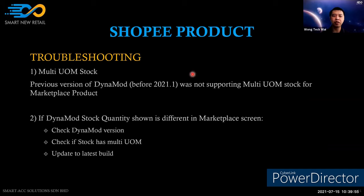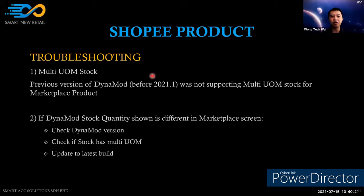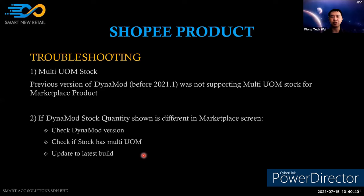The troubleshooting for the stock balance mismatch: first, check whether it is a multi-UOM stock item matched with a multi-UOM record, because in Dynamo the stock balance is stored by base UOM or converted to the respective UOM. This is why the balance in Dynamo may not represent the balance shown in Shopee. You must also verify the version to confirm whether multi-UOM is supported before troubleshooting.